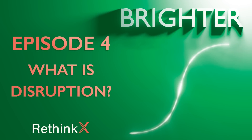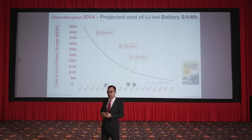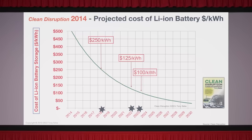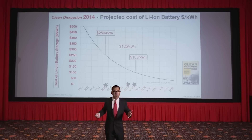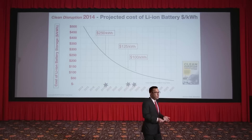Let's start with how to understand how disruptions happen — starting with technology cost curves. Back in 2014, I published a book called Clean Disruption of Energy and Transportation, and I published this exact cost curve for lithium-ion batteries out to 2030. You can't imagine how I was trolled for publishing that $125 per kilowatt hour by 2022 — 'It's never going to happen.' And here we are. It's been almost exactly what I forecast.